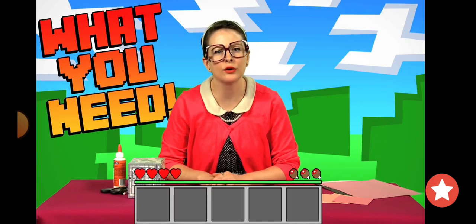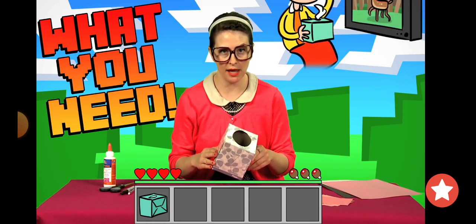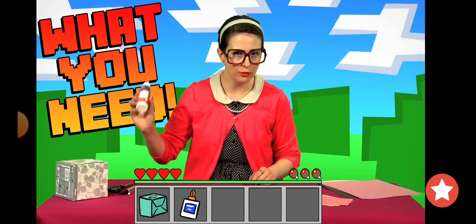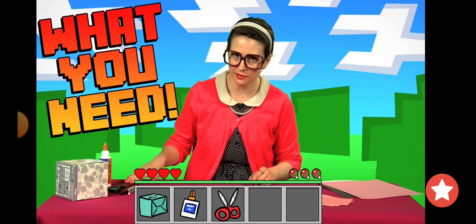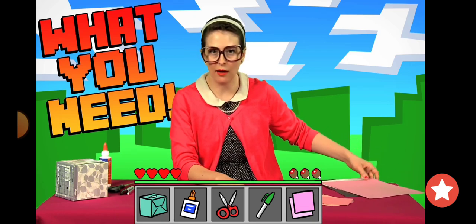So what do you need to make this craft? You're going to want to use a Kleenex box. It's empty because I just watched Bambi and I cried my eyes out, so I used all the tissues. Glue, pretty much always need glue. Scissors, stuff to write with. Construction paper - I got pink, I got black, I got white.